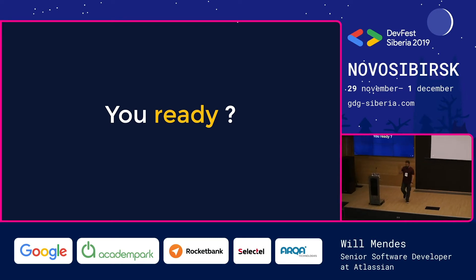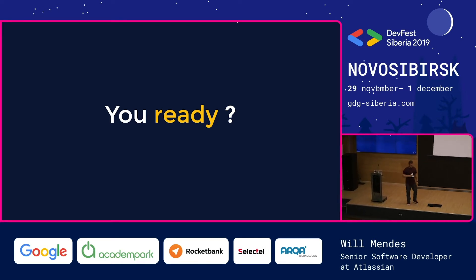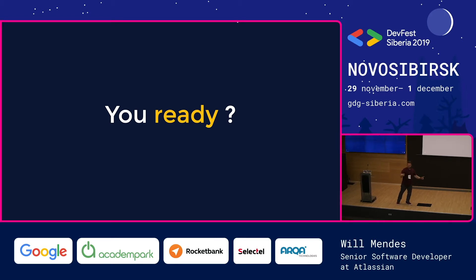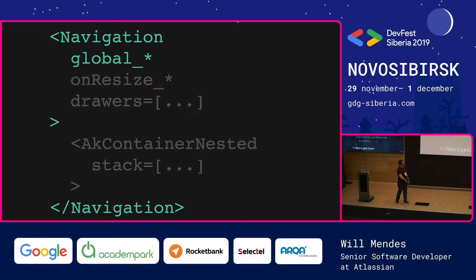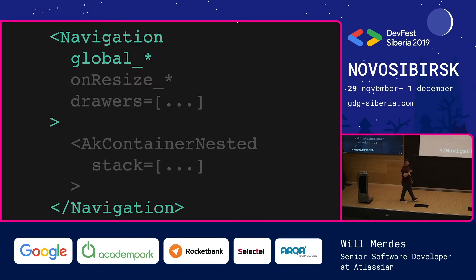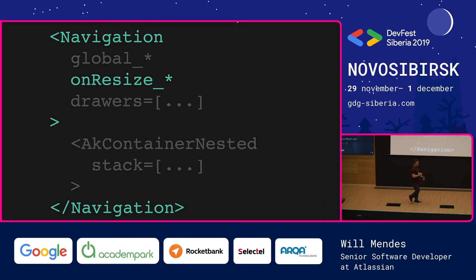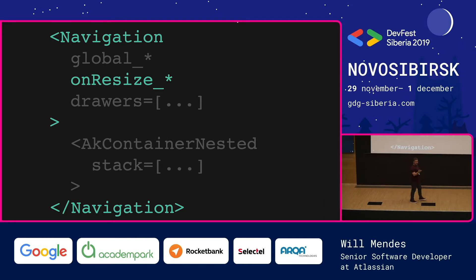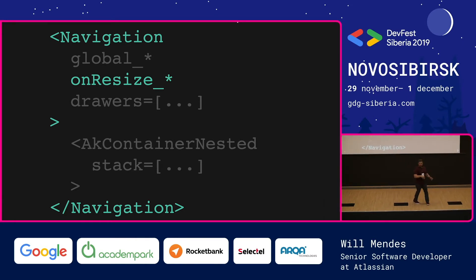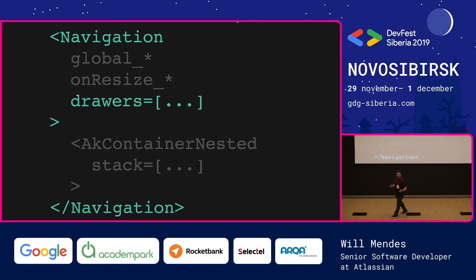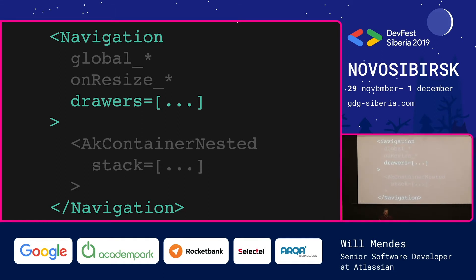Let's start. I'll try my best and as fast as I can so we can go further. That's the way it works: we have a component called navigation which has global props. These props can be pretty much everything. Outside of this, you can have events — resize, reflow, and so on. And you have drawers. Every time you click an icon, you can trigger an event, so it can be pretty much anything.